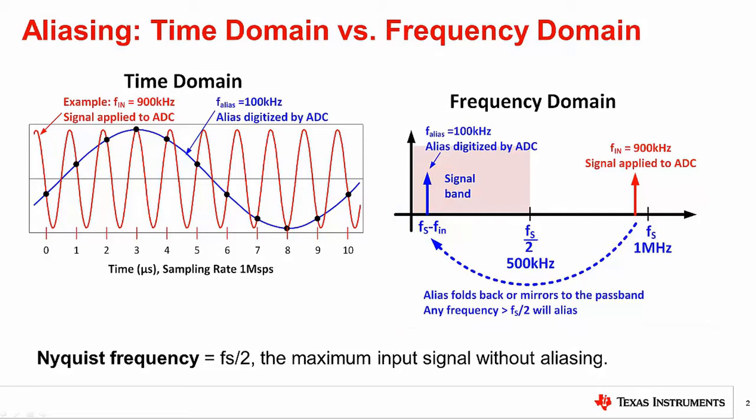The alias signal will appear in the signal band at the sampling frequency minus the input signal. That is, F_alias equals F_S minus F_in, or 1 megahertz minus 900 kilohertz, which equals 100 kilohertz.